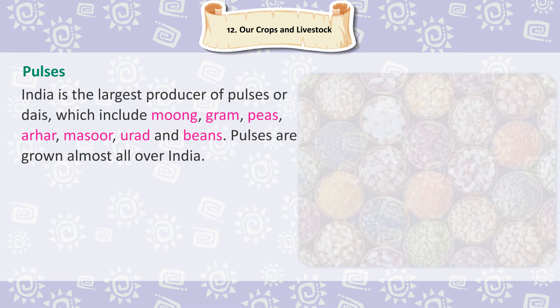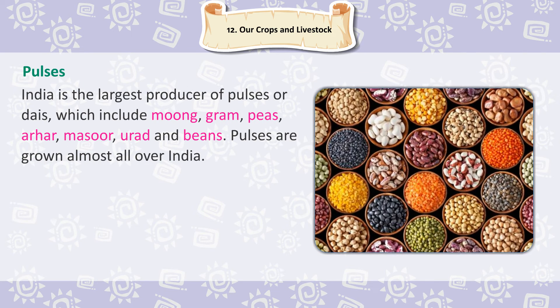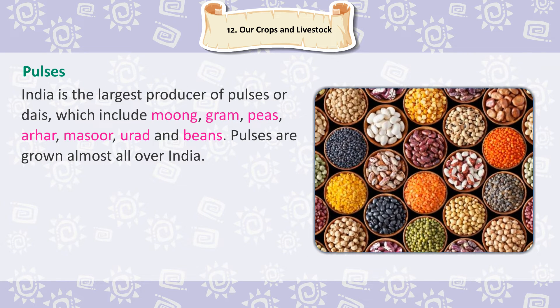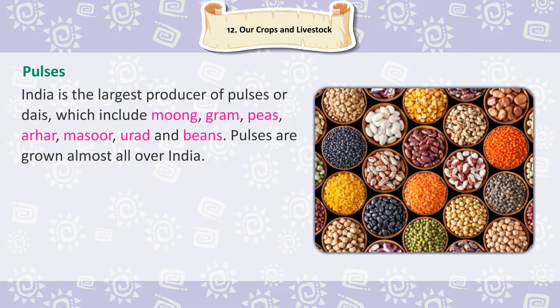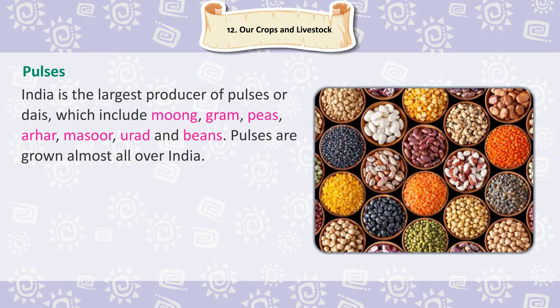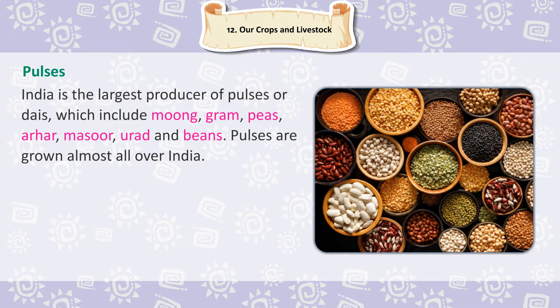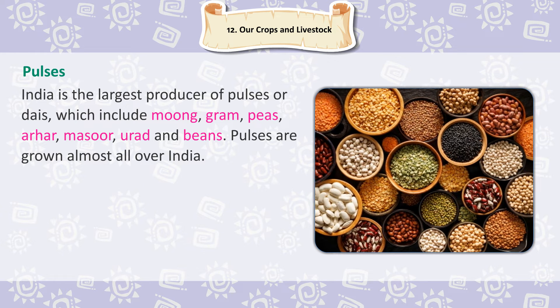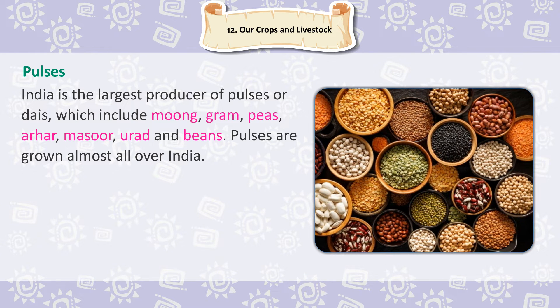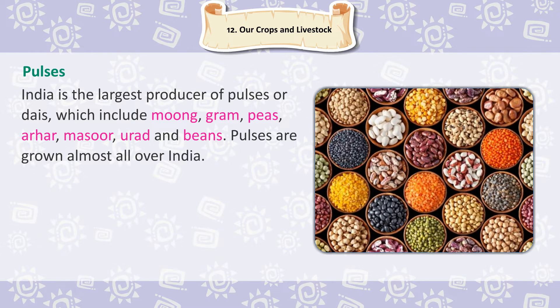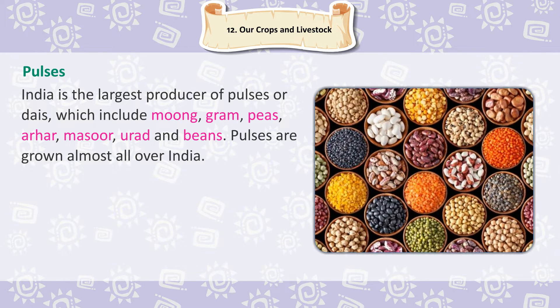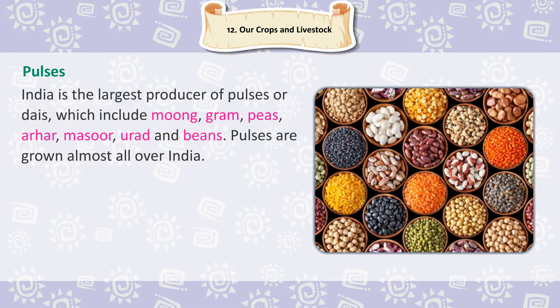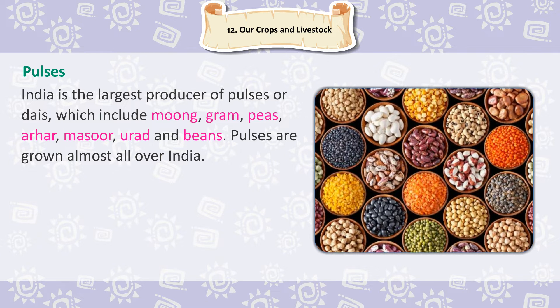Pulses. India is the largest producer of pulses or dals, which include moong, gram, peas, arhar, masoor, urad and beans. Pulses are grown almost all over India.